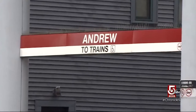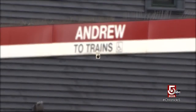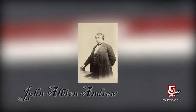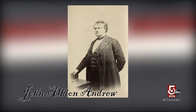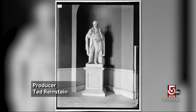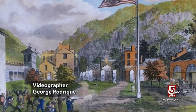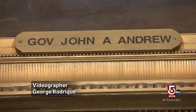Decades of T-Riders have likely wondered just who is Andrew? John Albion Andrew was the 25th governor of Massachusetts, holding the office during the Civil War. He was also a fierce abolitionist who defended John Brown after his raid on Harpers Ferry in 1859. Everyone knows he's an abolitionist — he wins by very wide margins in the Commonwealth all the times he's re-elected as governor.